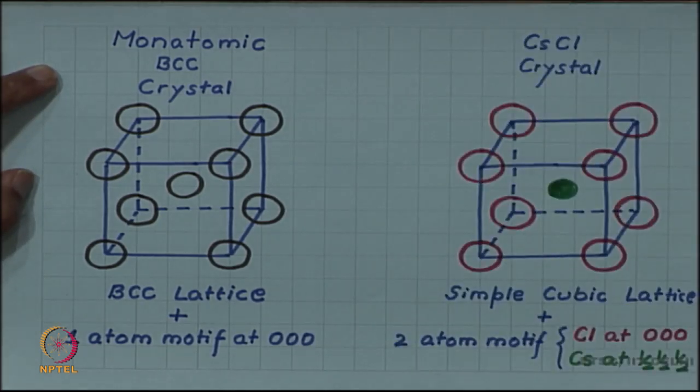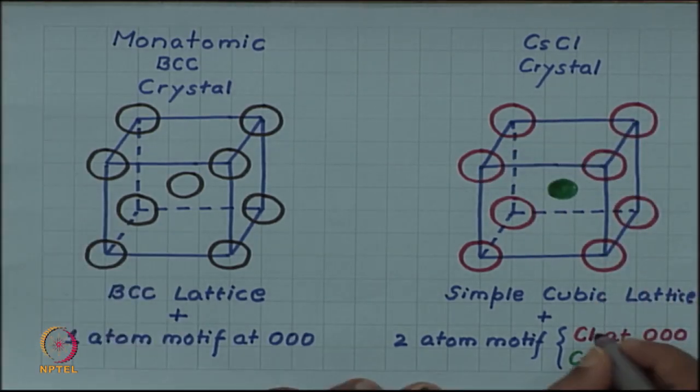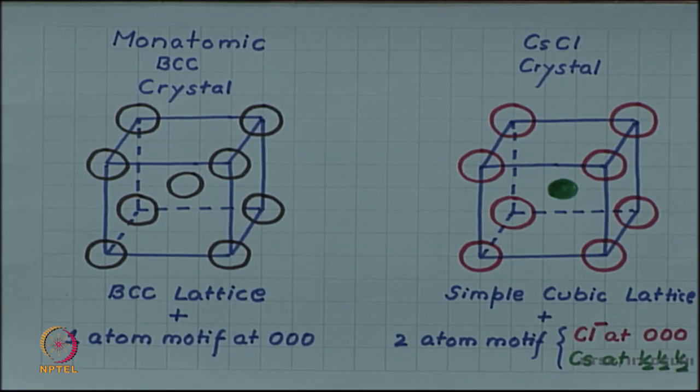Caesium chloride, we have seen, has chloride ions sitting at the corners but caesium ions sitting at the body center.